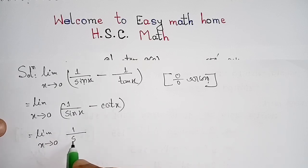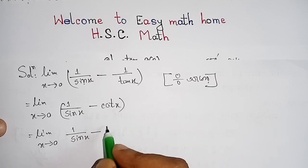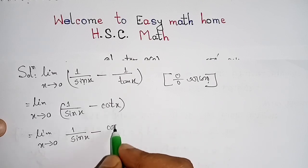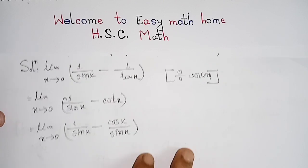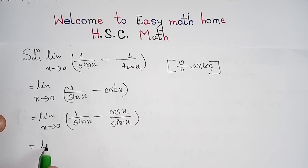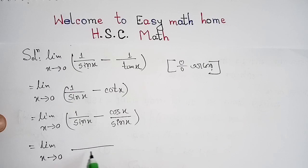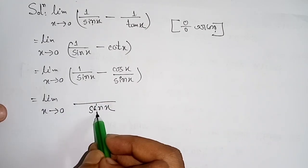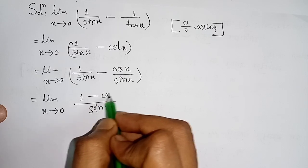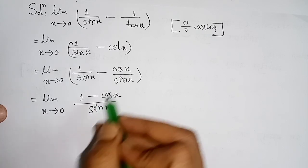So we rewrite: limit x→0 of (1/sinx minus cosx/sinx). Combining over a common denominator sinx, the numerator becomes (1 minus cosx) over sinx. Since sinx minus sinx = 0 in the numerator needs further work.